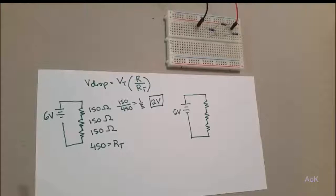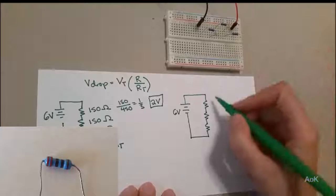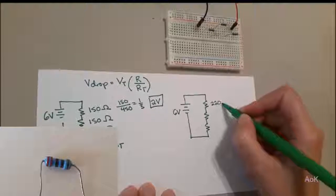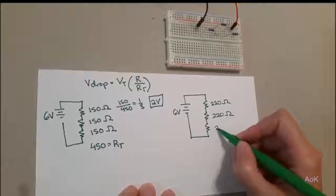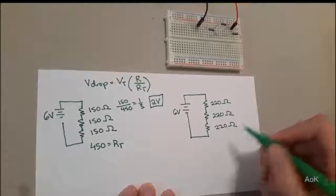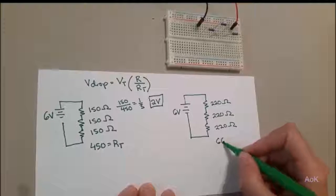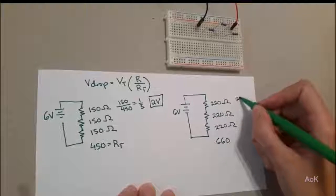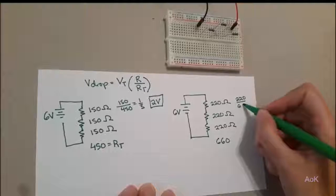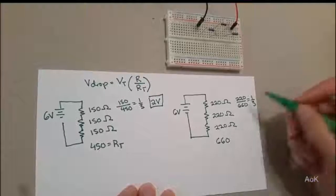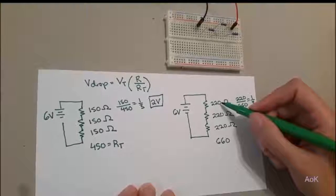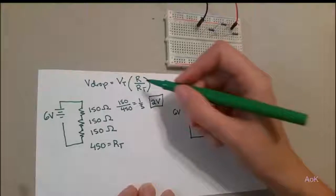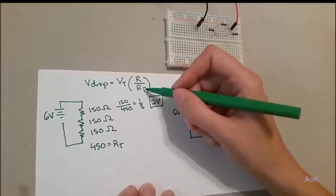Here we have a new series circuit. This time each resistor is 220 ohms. We can apply the same formula as before, and what we will find is that the ratio is the same as previously. What this tells us is that it's not the exact number of the resistor that matters, but the ratio of the resistance over the total resistance.